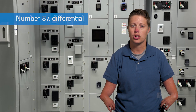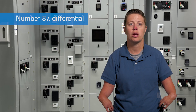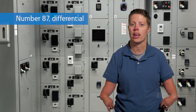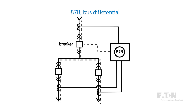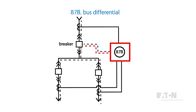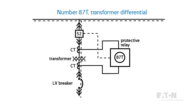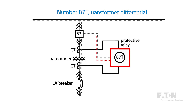Number 87, differential. Differential protection compares measured current in different locations. For example, bus differential protection compares the current flowing into a bus to the current leaving the bus. During normal operating conditions, the sum of these currents should be zero. During a fault condition, the sum would no longer be zero and the relay sends a trip signal to the breaker. Transformer differential protection similarly compares the current entering a transformer primary to the current leaving the transformer secondary, taking into account the turns ratio.